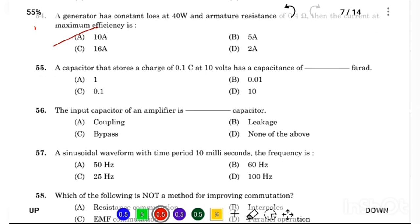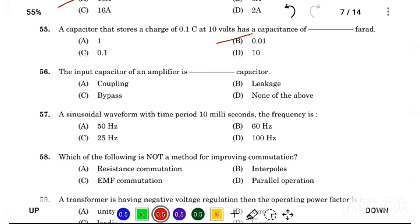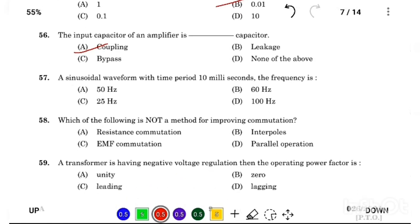A capacitor that stores a charge of 0.1C at 10V has a capacitance of Answer Option B, 0.01 farad. The input capacitor of an amplifier is Answer Option A, coupling capacitor. A sinusoidal waveform with time period 10 ms, the frequency is Answer Option D, 100 Hz.